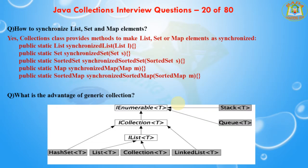The next question is: how do you synchronize List, Set, and Map elements? The Collections class provides methods to make List, Set, and Map elements synchronized. If you see here, these are the methods available in the Collections class to synchronize our List, Set, and Map, and also to sort them.